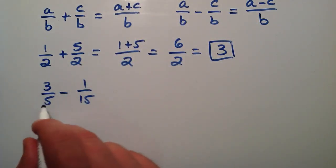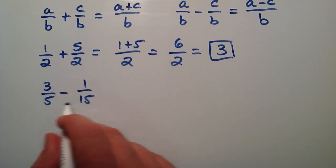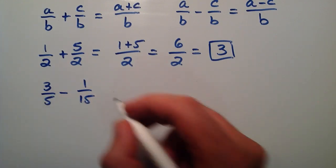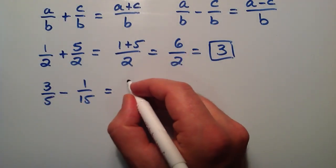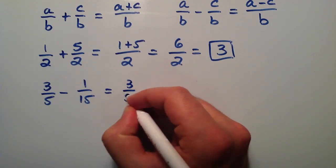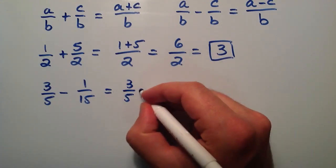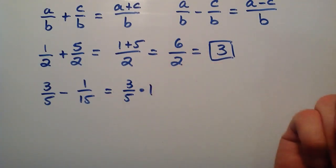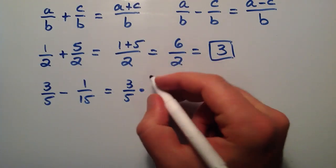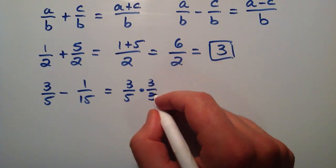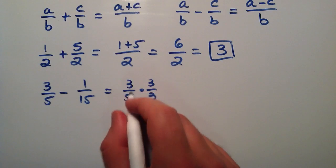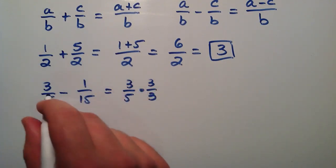What we need to do is we need to change this into a fifteen, so that our denominators match. We can multiply three fifths by the number one, because three fifths times one is still three fifths. But instead of multiplying it by one like this, we're going to multiply it by three divided by three. Since three divided by three is equal to one, this is really just three fifths times one, which equals three fifths.